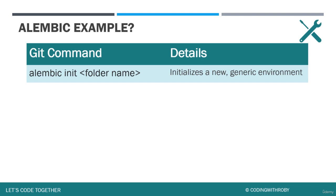Let's go over some of the Alembic commands we will be covering in this section. The first command is the Alembic initialization step. To initialize an Alembic directory, we type 'alembic init' and then the folder name, which we will just call 'alembic' in this project. This command will initialize a new generic environment, creating an Alembic directory where we can get started with revisioning our scripts.